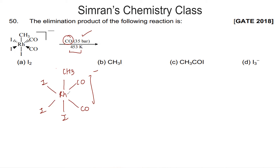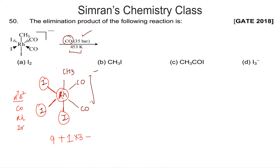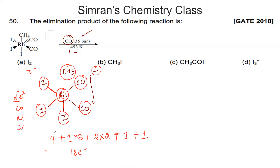Counting electrons in the starting complex: Rh contributes 9, three iodines contribute 3 (1 each via single bond), two carbonyls contribute 4 (2 each), the anionic charge contributes 1, and CH3 contributes 1 — totalling 9+3+4+1+1 = 18 electrons. This is an 18-electron species. To add CO (oxidative addition), we must first create a vacant site by reducing to 16 electrons.